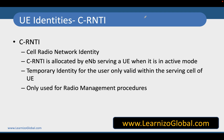In this video we are going to talk about C-RNTI, which is typically called Cell Radio Network Temporary Identity. C-RNTI is allocated to the UE by the eNodeB — specifically the eNodeB which is currently serving you. This identity is only valid when the user is in connected mode or active mode. As soon as the user moves to idle mode, the C-RNTI will be released.